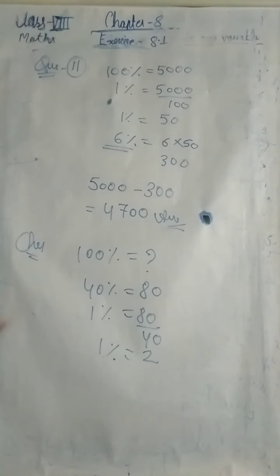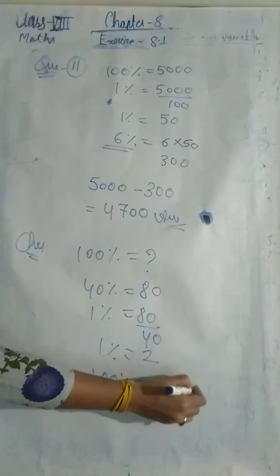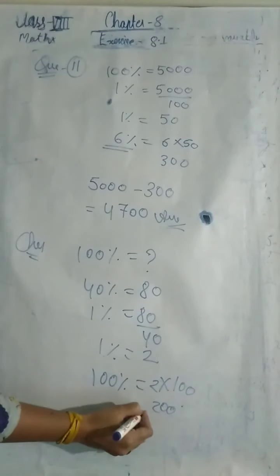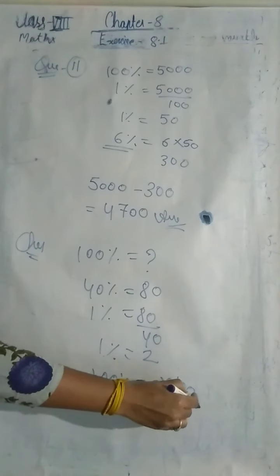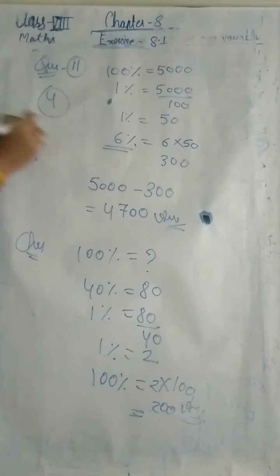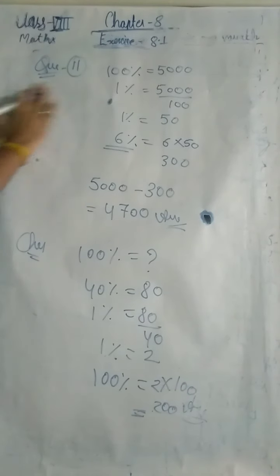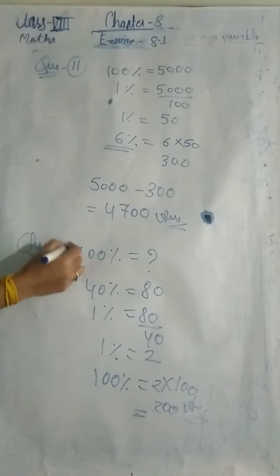Then multiply 2 by 100 to get the total, which is 200 students. Now question number 13: Kumar spends 30% of his pocket money on stationary and 3% on sweets.